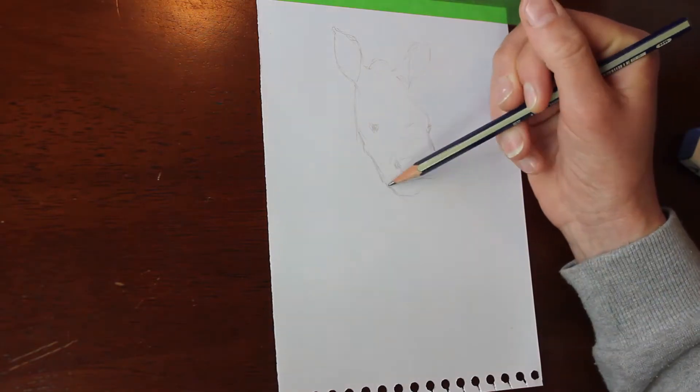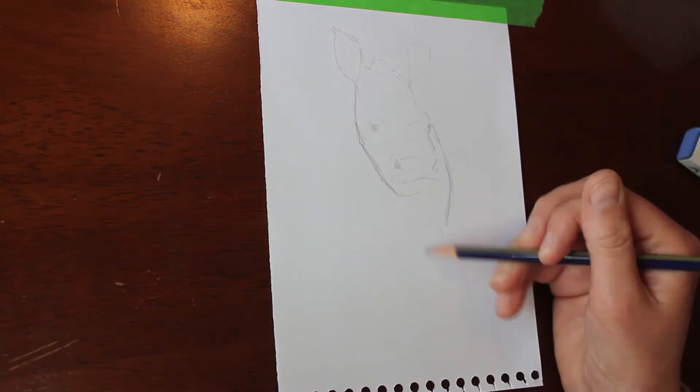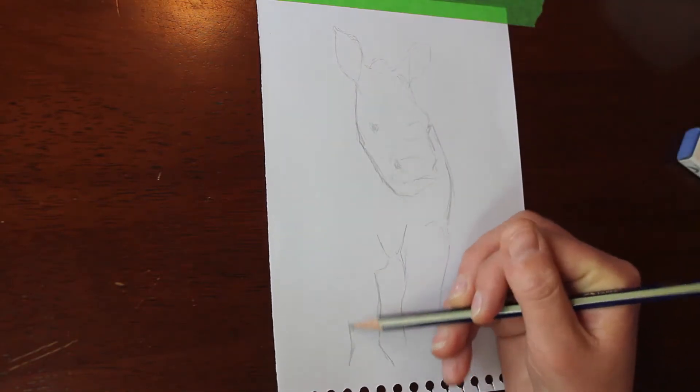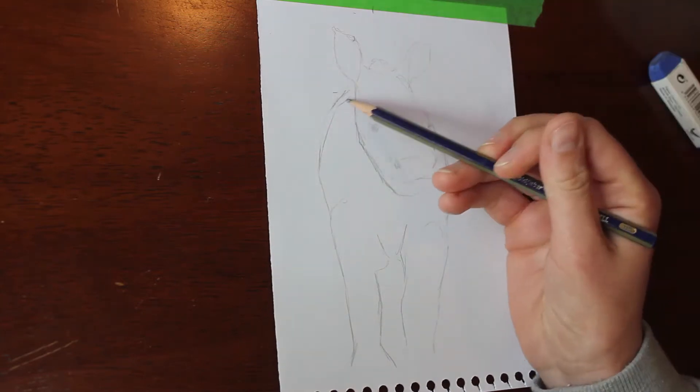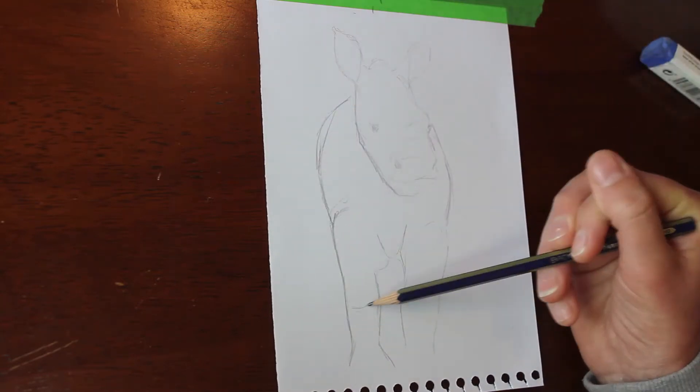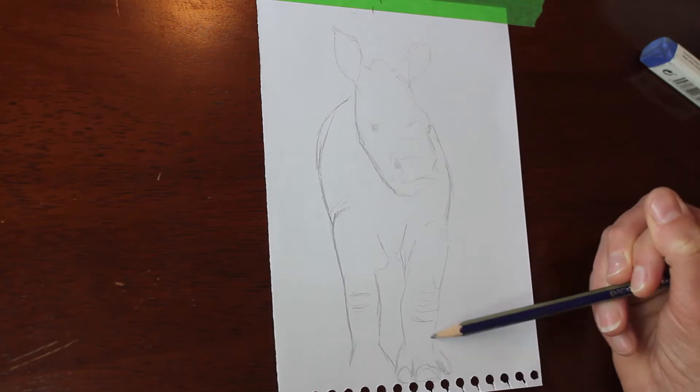Now as you can see I'm just doing a little sketch here. This is a white rhino calf that I photographed at a zoo not that long ago, a few months ago when she was only a couple of months old.